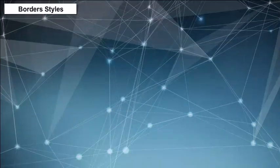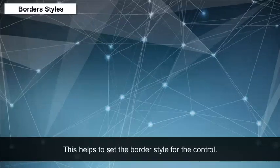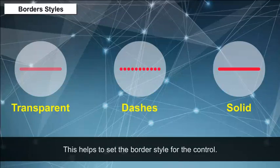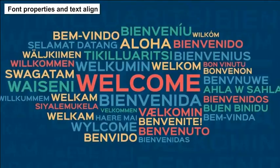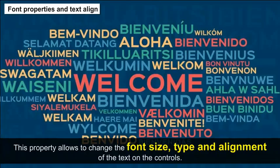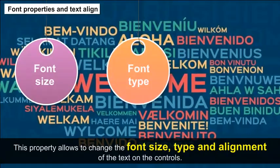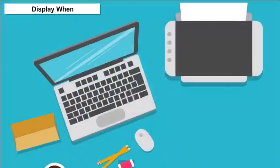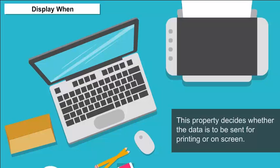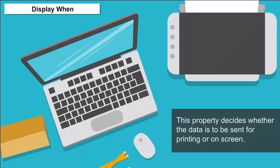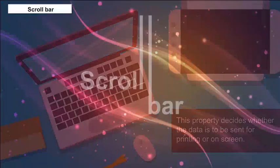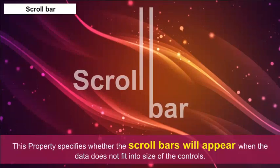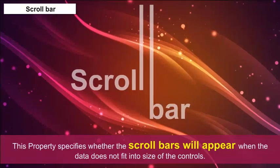Border Styles: Helps to set the border style for the control, like transparent, dashes, solid, etc. Font Properties and Text Align: Allows changing the font size, type and alignment of text on the controls. Display When: Decides whether the data is to be sent for printing or on screen. Scroll Bar: Specifies whether scroll bars will appear when the data does not fit into the size of the controls.